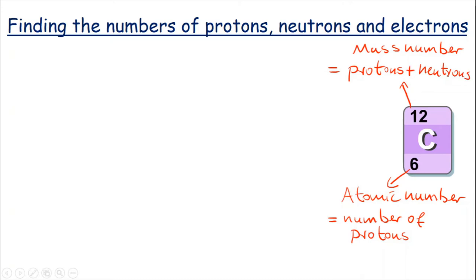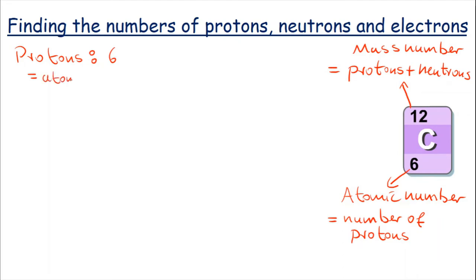So to find the number of protons, we just have to look at the atomic number. The atomic number is 6, so that tells us that carbon has 6 protons.